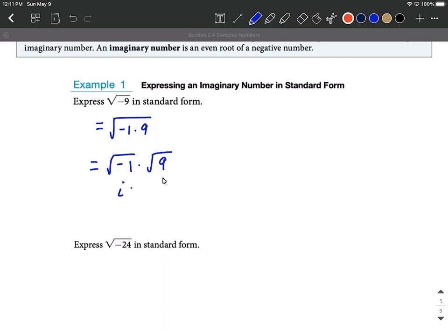And then all we have to do is simplify down the square root of nine, which we've done in the past, which would be three. So that's going to be the same thing as three i, or in standard form we could say zero plus three i. So what that would mean is our real part is zero and our imaginary part is three.